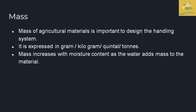Mass of an agricultural material is usually important for designing the handling system. It is mainly expressed in grams, kilograms, quintals, and tons. Mass increases with moisture content, as water adds mass to the material in agricultural commodities.